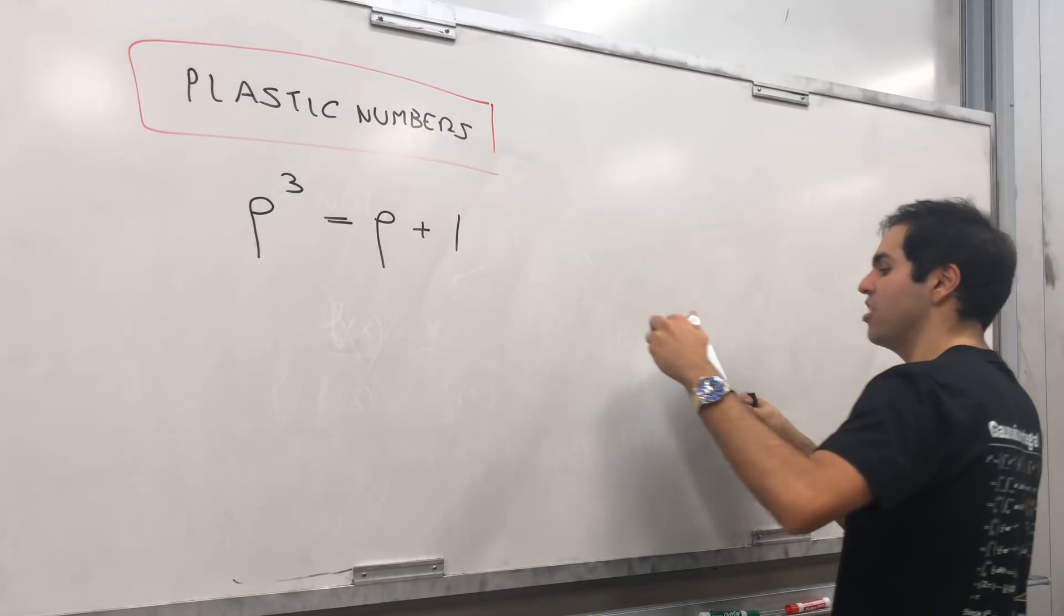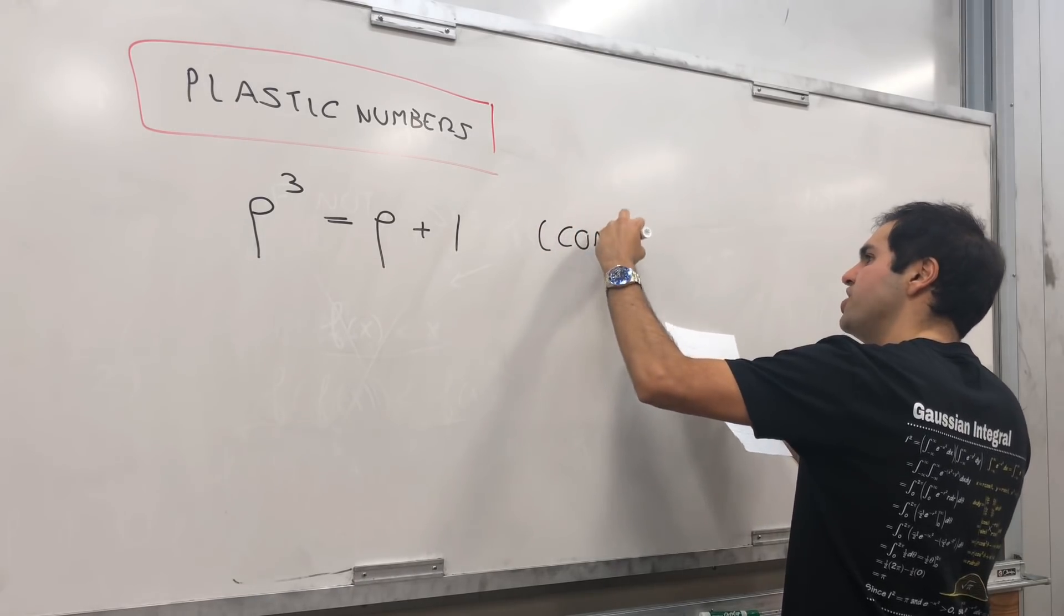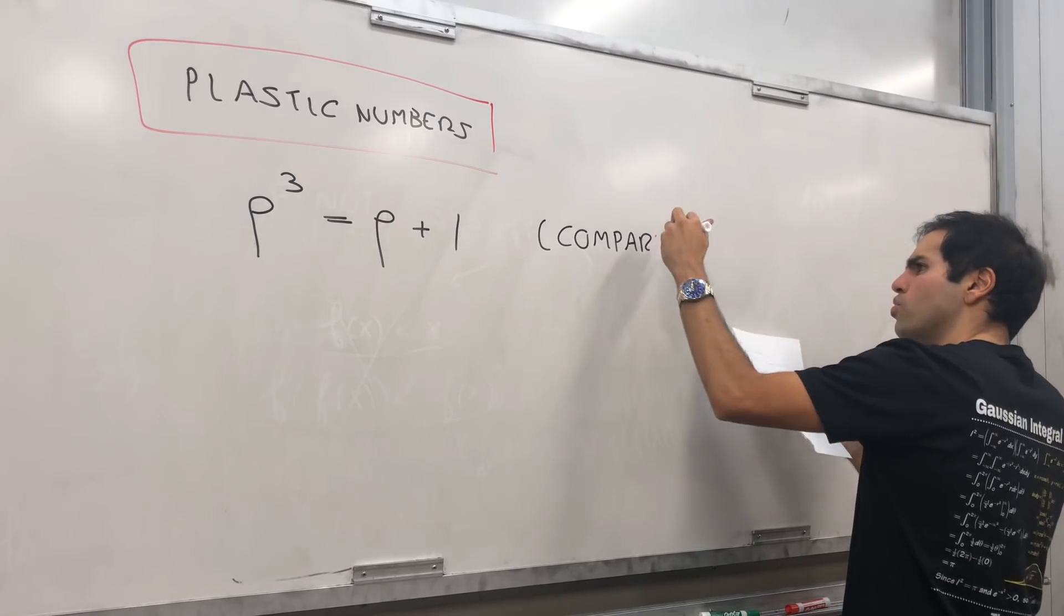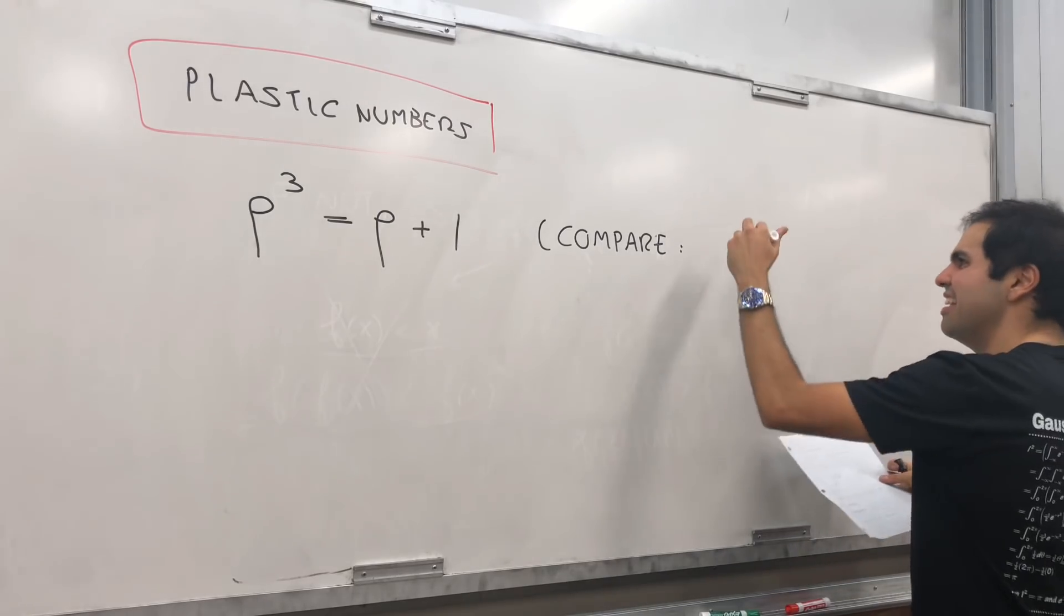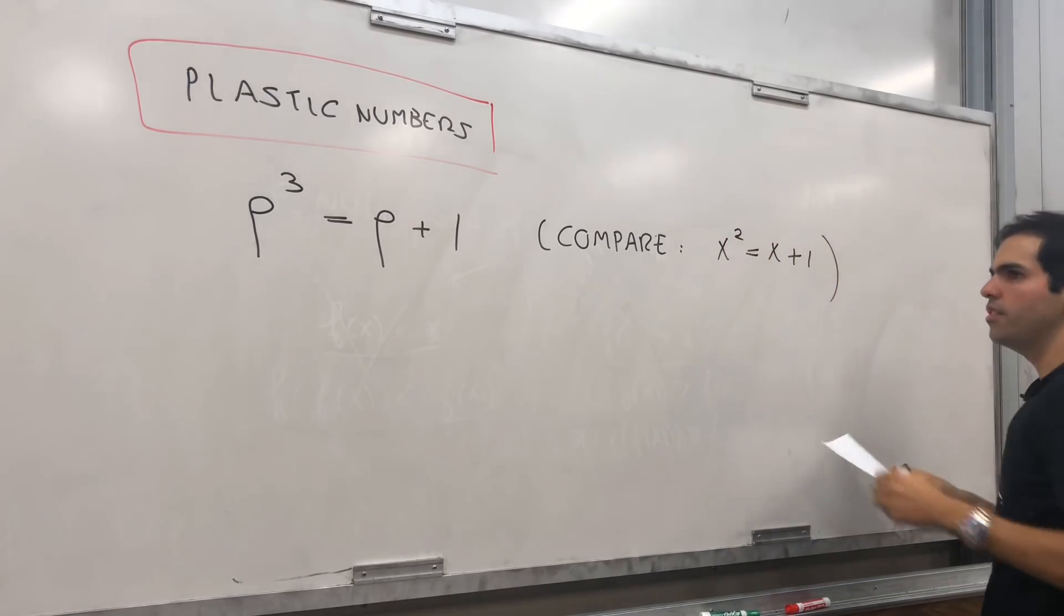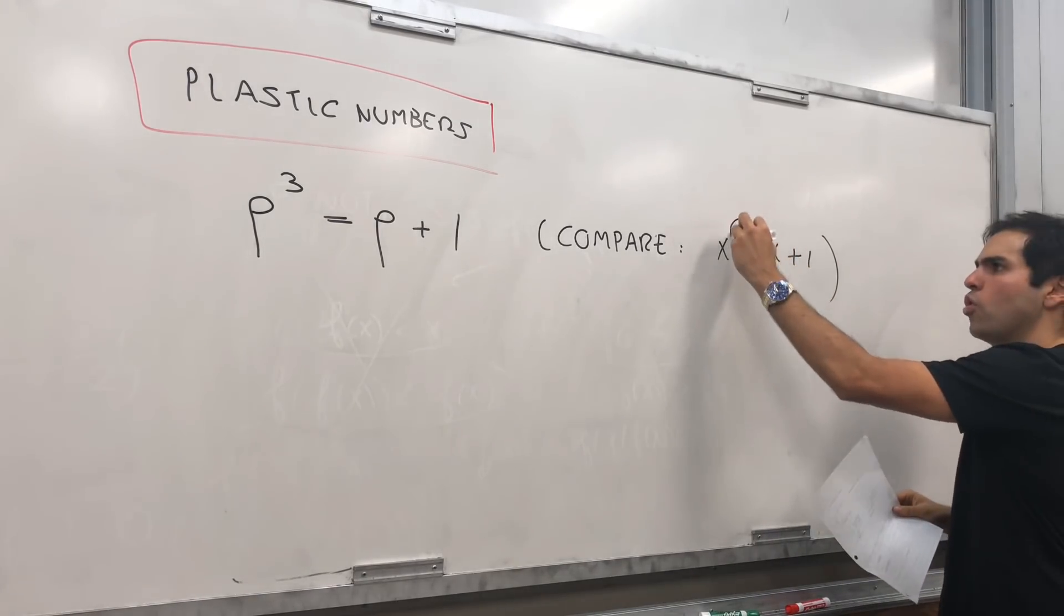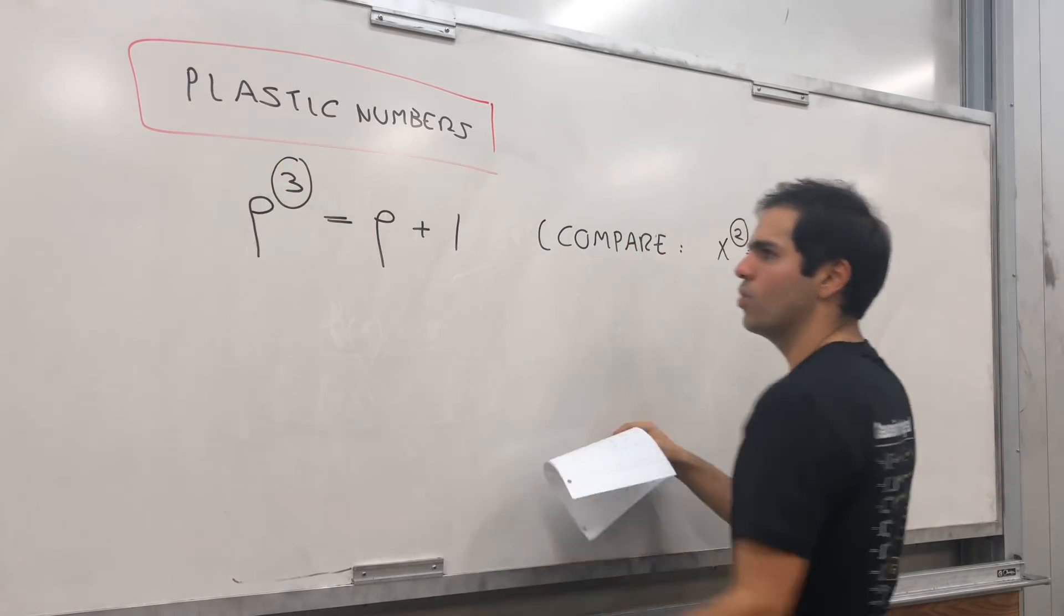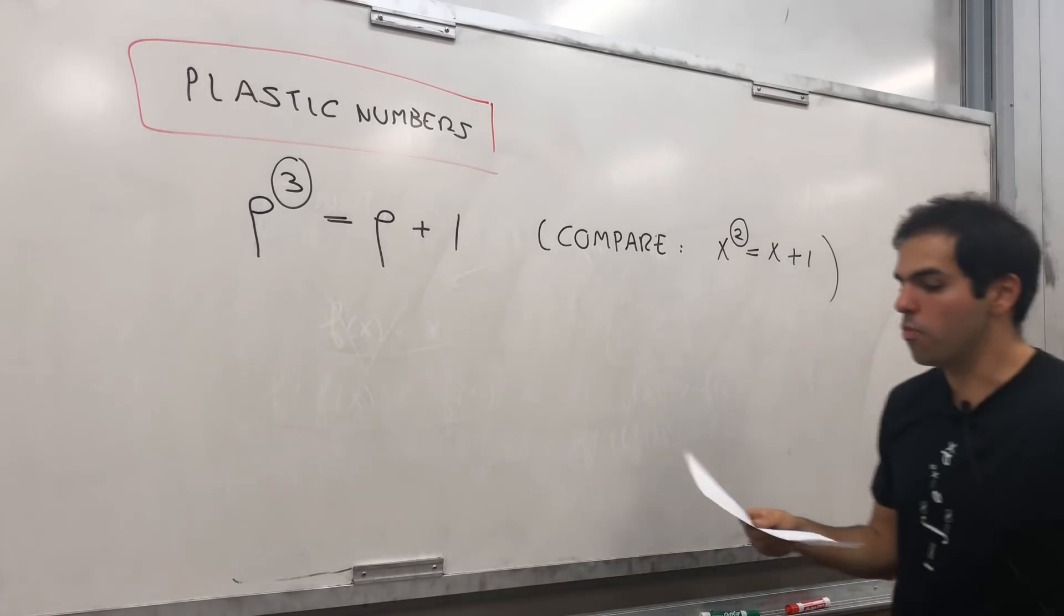And that's what's called the plastic number. And I really want you to compare this to the Fibonacci sequence. Because the golden ratio, sorry not Fibonacci, the golden ratio is x squared equals x plus 1. And the only difference, notice, is the power. For the golden ratio we have x squared equals x plus 1. For the plastic numbers, you have rho cubed equals rho plus 1.